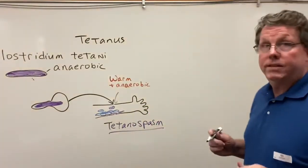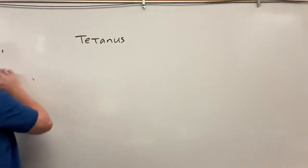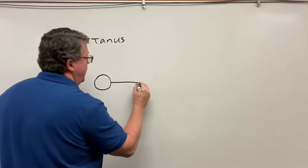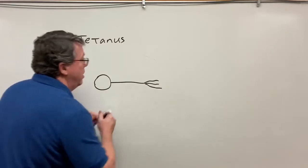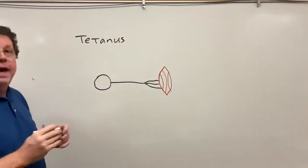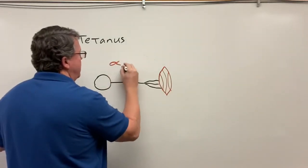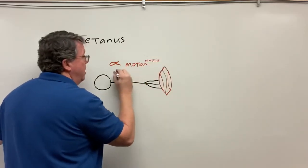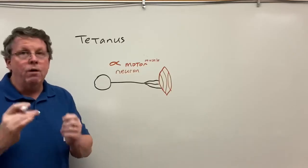In your nervous system you have nerves that go out to muscles — here's a nerve going to a muscle with muscle spindles. An electrical impulse comes down and makes that muscle contract. We call this an alpha motor neuron — 'motor' because it controls muscle.